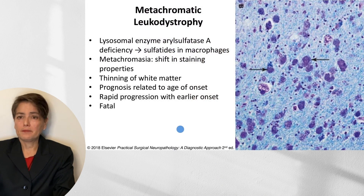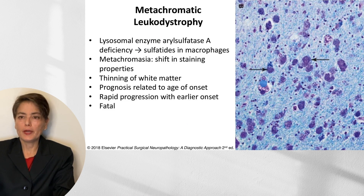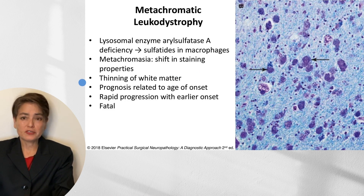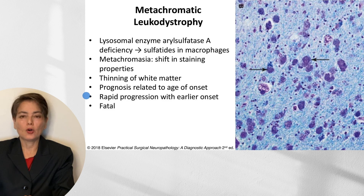Metachromatic leukodystrophy is due to a deficiency of arylsulfatase A, leading to the buildup of sulfatides. A histologic specimen shows these sulfatides in macrophages, referred to as metachromasia because staining with a particular stain produces a shifted appearance. Grossly, we see thinning of the white matter. Prognosis is related to age of onset — early infantile presentation shows very rapid progression, while slightly later presentation progresses more slowly — but it is also a fatal disease.